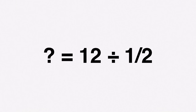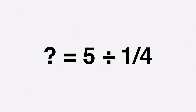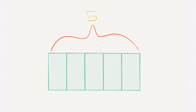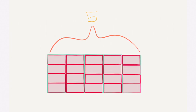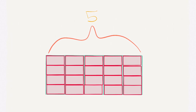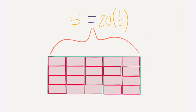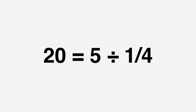How many quarter hours are in 5 hours? This is measurement division — how many one fourths are in 5? We can write it as 5 divided by one fourth. Visually, I draw my 5 wholes and divide each into four parts, because each part is one fourth. Counting all the one fourths in 5, I see there are 20. So 5 divided by one fourth equals 20.